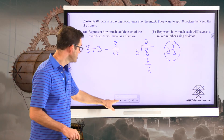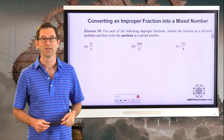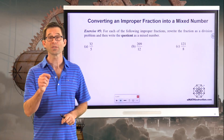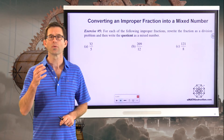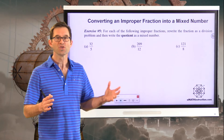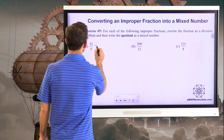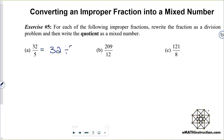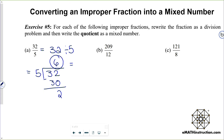Exercise five: converting an improper fraction to a mixed number. We did this in the first lesson of this unit, but now let's think about it using division. For each improper fraction, rewrite it as a division problem and write the quotient as a mixed number. Let's do 32 fifths together — it's the same as 32 divided by five. Using long division: five goes into 32 six times, and I'm left with a remainder of two. So 32 fifths equals six and two fifths.